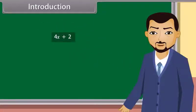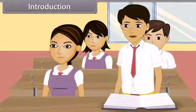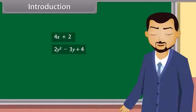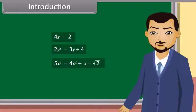Students, look at this polynomial. What can you say about this? This is a polynomial in the variable x of degree. Similarly, 2y squared minus 3y plus 4 is a polynomial in the variable y of degree 2, and 5x cubed minus 4x squared plus x minus square root 2 is a polynomial in the variable x of degree 3.